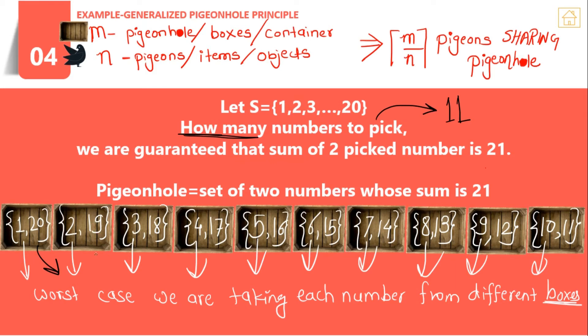In the worst case we pick only one element from each of these boxes—we don't want our two elements to have a sum of 21 yet. So we pick one element from each of the 10 different boxes. When you pick the 11th number on the next round, it will form a sum of 21 with one of the previous elements. This guarantees that the sum of two picked numbers is always 21. So the count of numbers is 11.